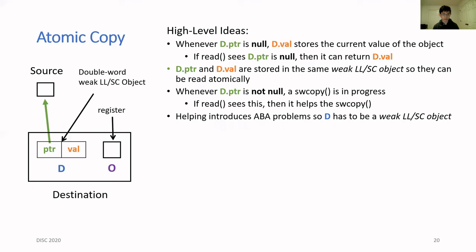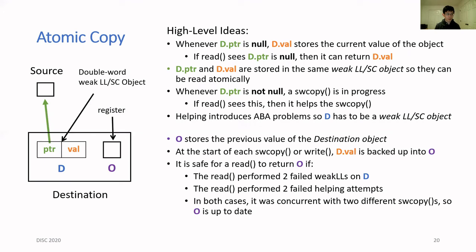There's still a few more problems to address. The first one is that the only way to view the contents of D is by using a weak LL. This means that the read operation might always fail on this weak LL and it might never be able to see the contents. Another related problem is that supposing the read operation is able to see the contents, it could be that the pointer it sees is always not null and it has to continuously help and it never sees a value that it can safely return.